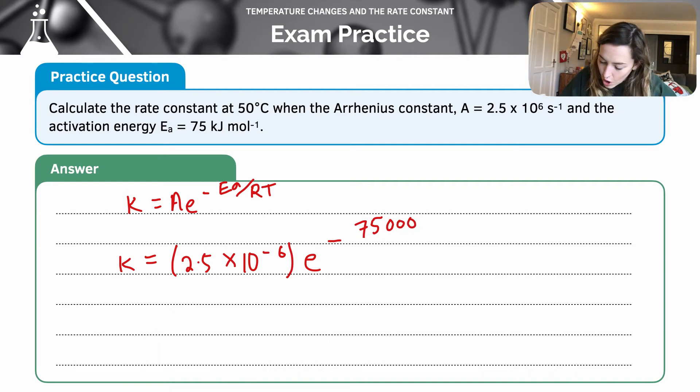So 75,000 joules per mole divided by my gas constant, which is 8.31 times by my temperature that has been converted into Kelvin. Of course, they'll be looking for that correct conversion. So 50 degrees Celsius plus 273, which is 323. So I plug this into my calculator, being really careful that for my specific calculator, all of my brackets are in the right place.